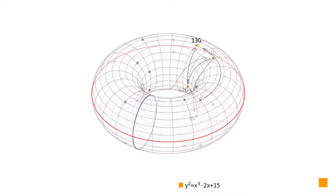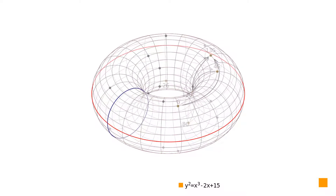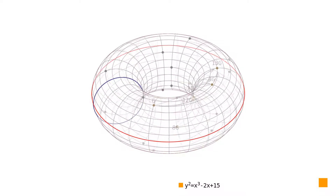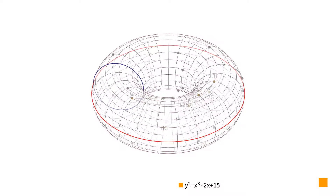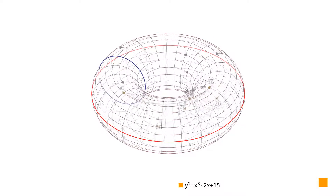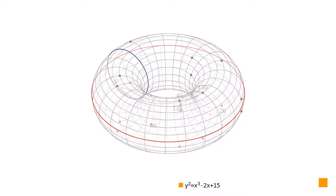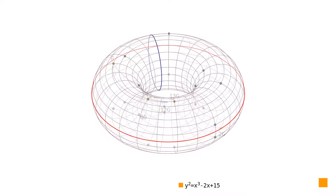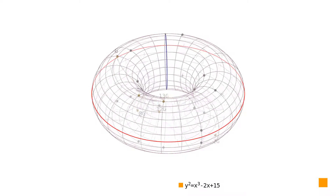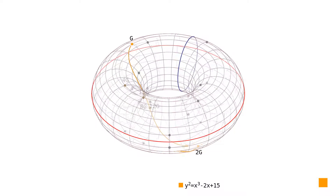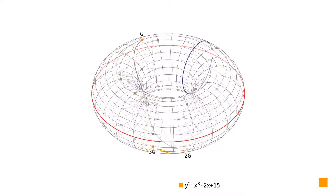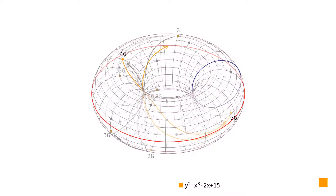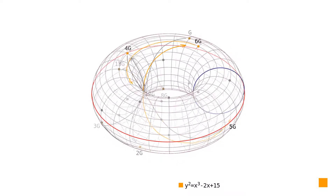But if we choose a point on the elliptic curve in simple Weierstrass form — be it over a finite field or real numbers — there is no easy way to tell how many times we need to multiply a given generator to get the chosen point. The only known algorithm uses the naive approach of consecutively adding the generator to itself until the chosen point is found.